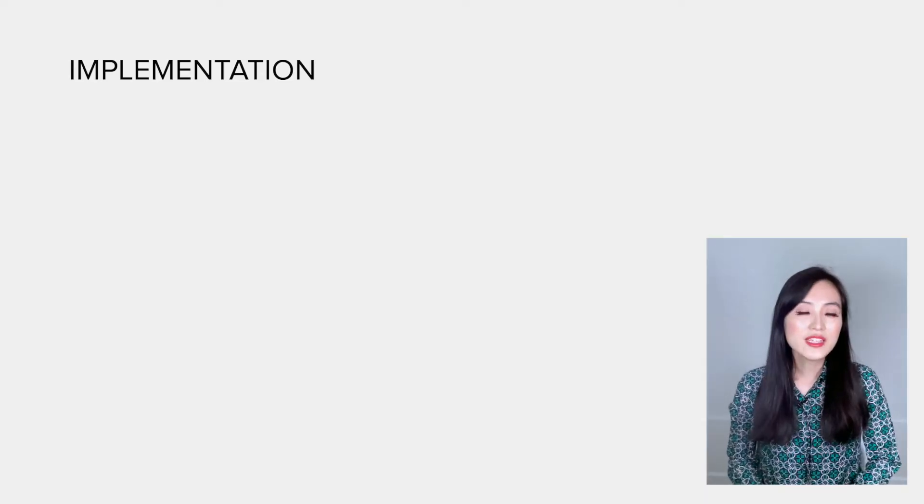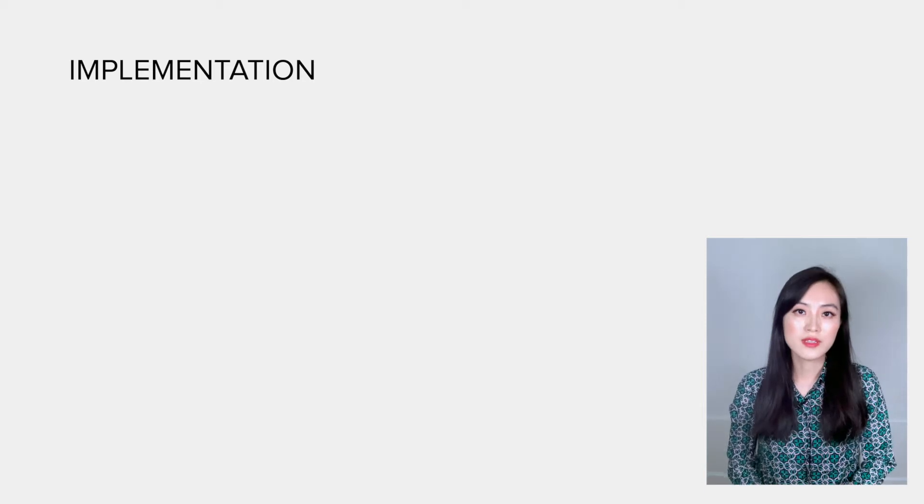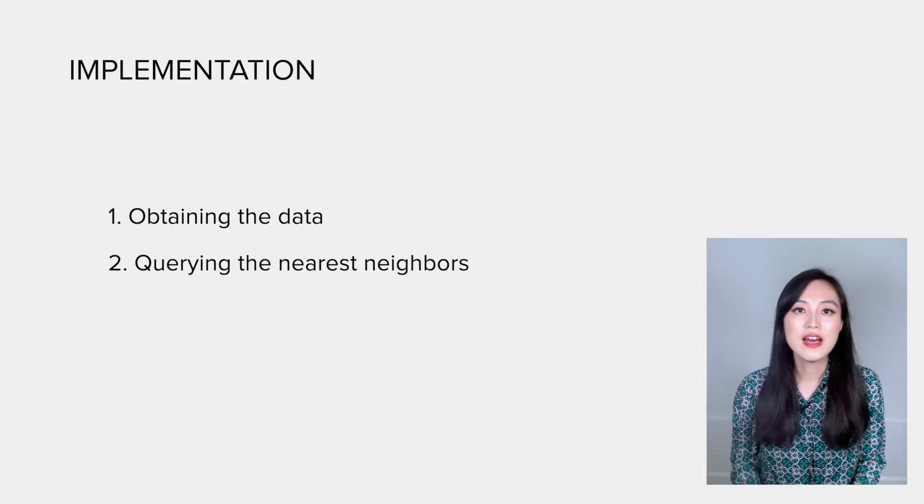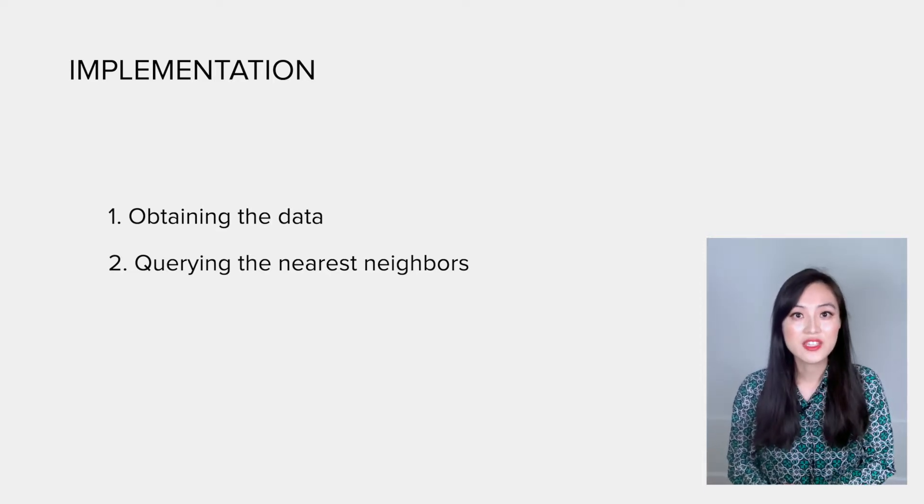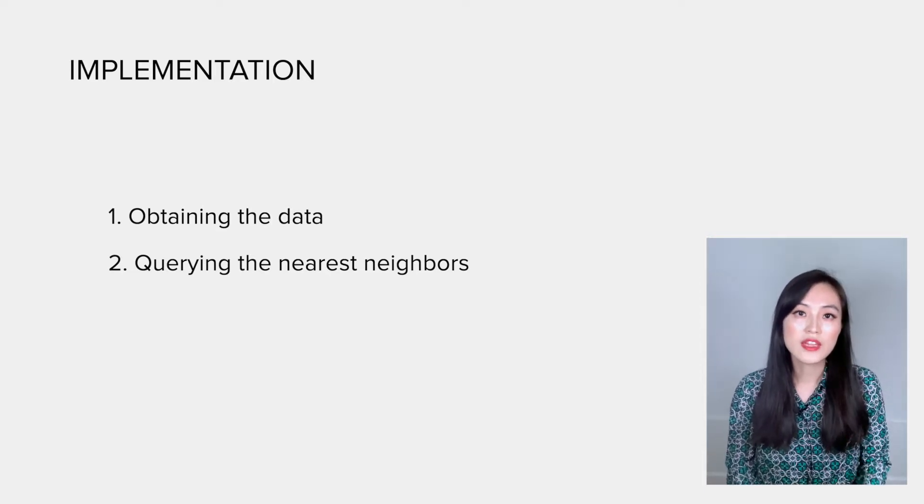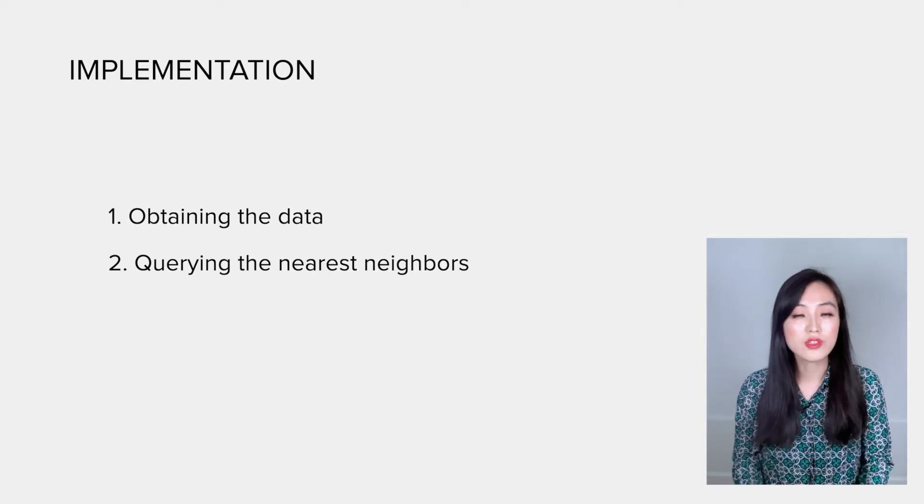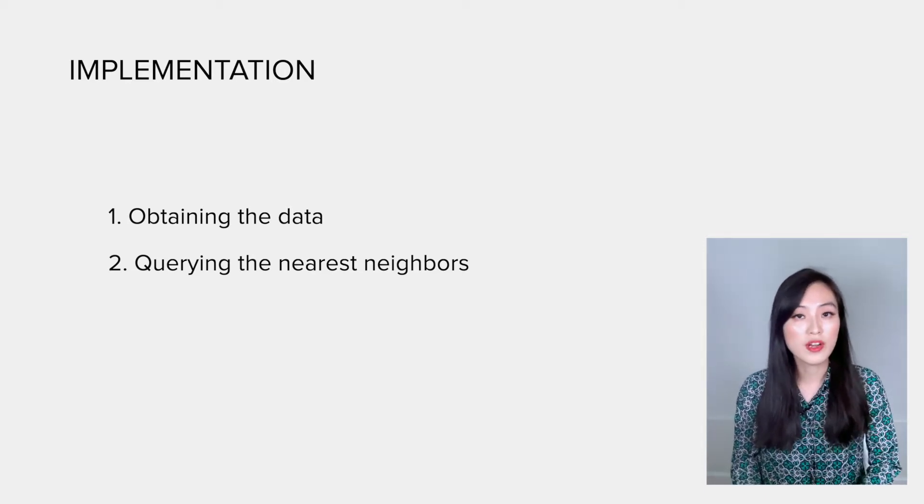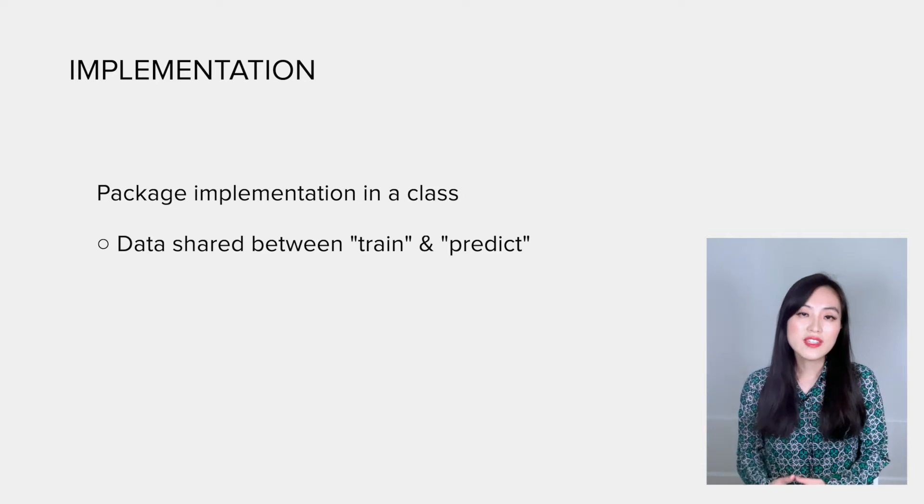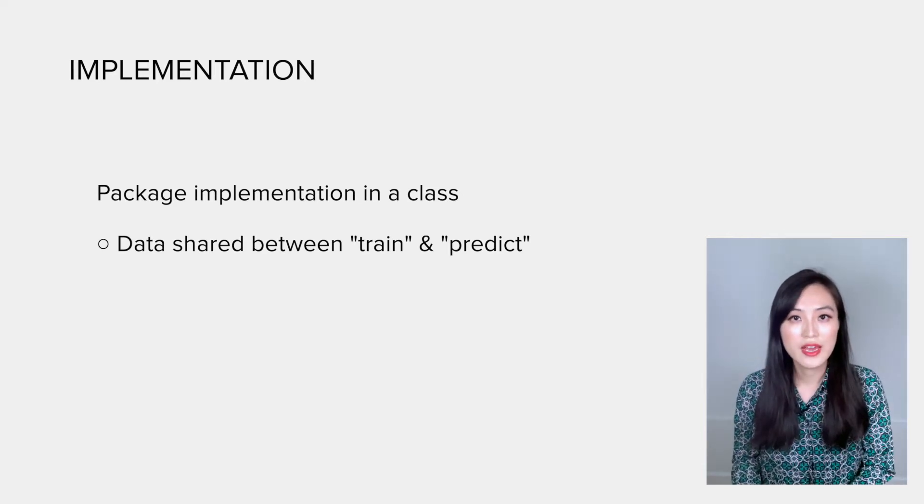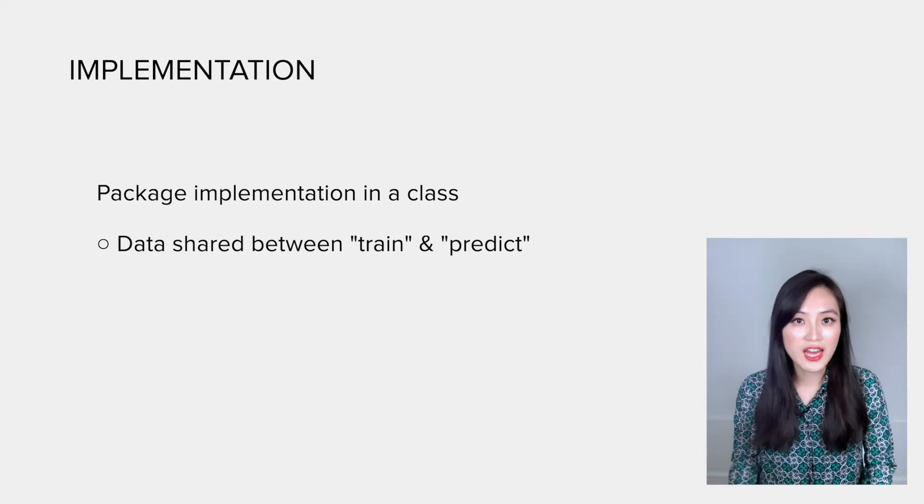So let's take a look at it together. To implement KNN, there are only two simple steps: obtaining the data and acquiring the nearest neighbors for prediction. I mentioned earlier that KNN is a non-parametric model, and its training and prediction are different from parametric models, which involve using a training process to get the values of parameters and then use those parameters to make predictions. For KNN, the data is shared between training and prediction. It makes sense to package our implementation in a class so that functions in that class could share variables.